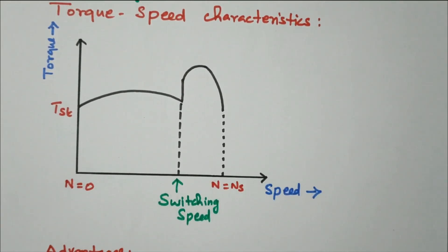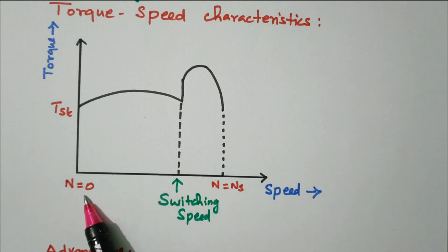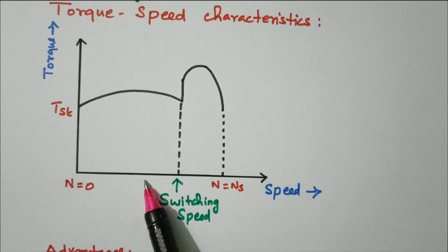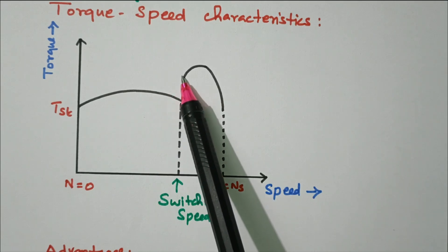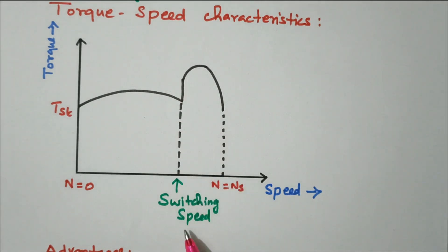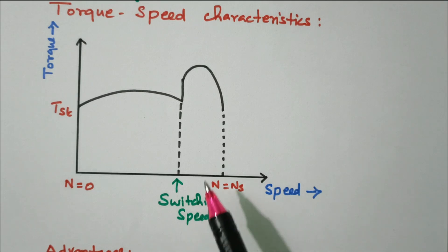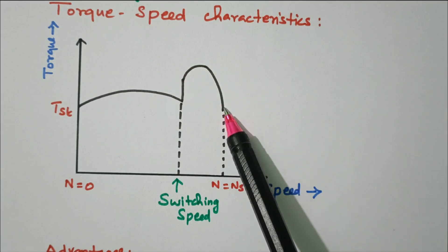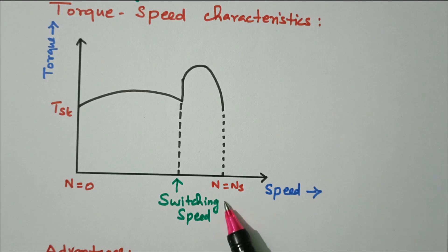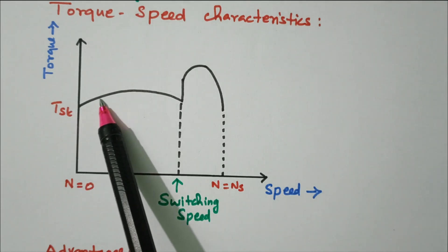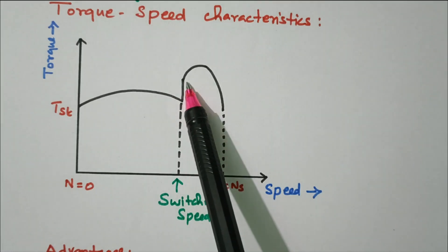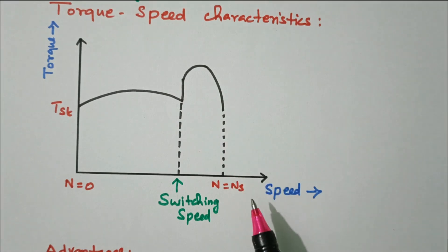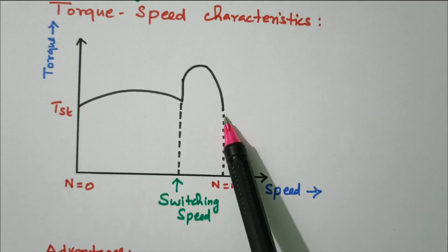Now we'll see the speed-torque characteristics. On the x-axis is speed and on the y-axis is torque. At starting (speed zero), there is maximum starting torque. As speed increases, the torque increases gradually. At one point the torque increases suddenly — this is called the switching speed — where magnetic locking occurs and the motor starts rotating at synchronous speed. After that, the torque rapidly increases then gradually reduces and reaches steady state at synchronous speed N = Ns.